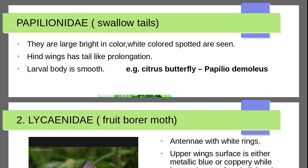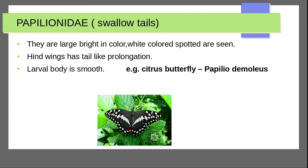Next butterfly family is Papilionidae — they are large and bright in color. White-colored spots are seen on wings. Hindwings have a tail-like prolongation. Larval body is smooth. Example: citrus butterfly — Papilio demoleus.